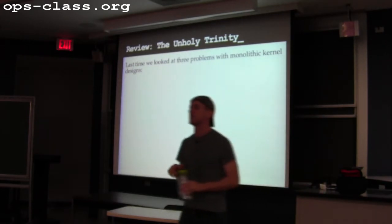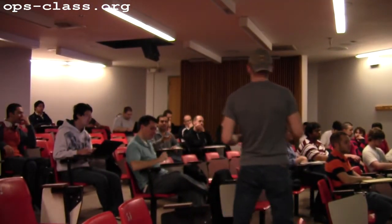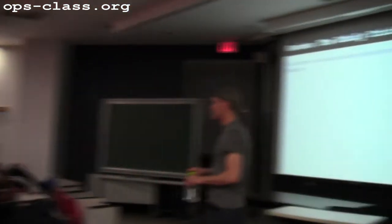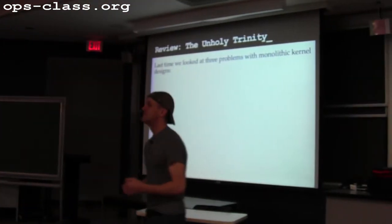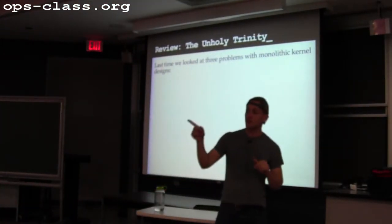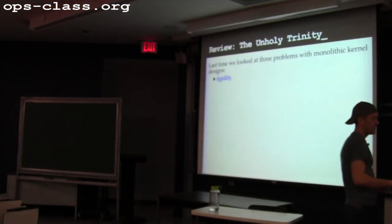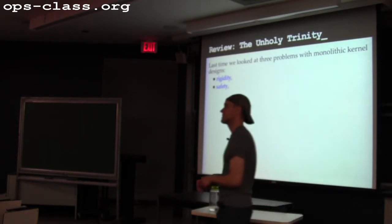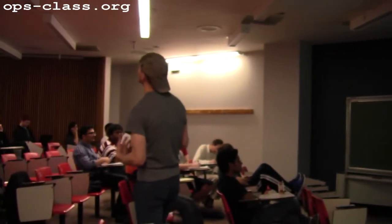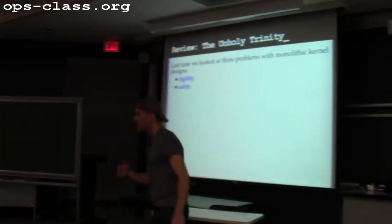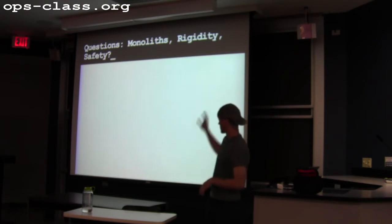There were three big problems with monolithic kernel designs: safety or security issues, rigidity or inflexibility, and complexity. The code can get really complex and gross, making all these calls across internal interfaces, and things can get really nasty. That's as far as we got on Wednesday. We talked about rigidity, kernel modules, and safety in terms of device drivers.